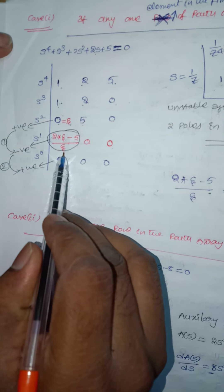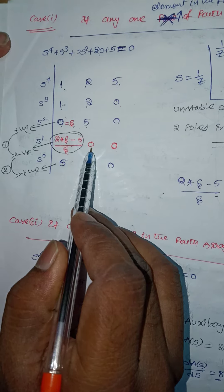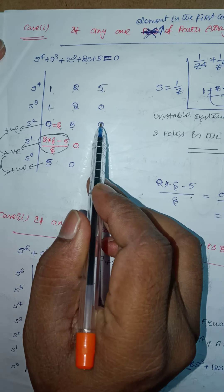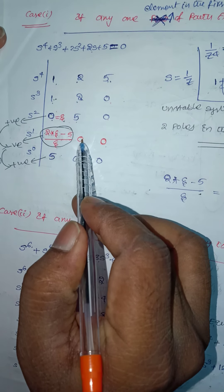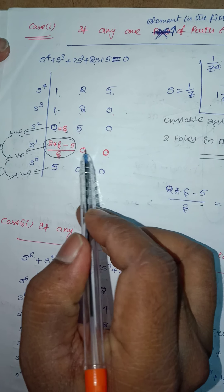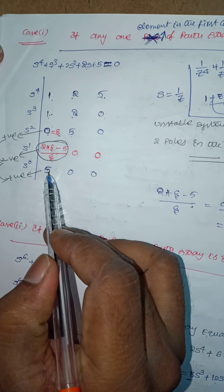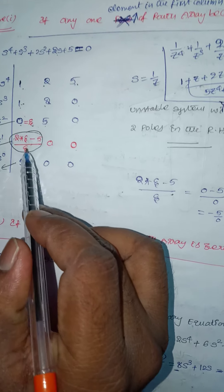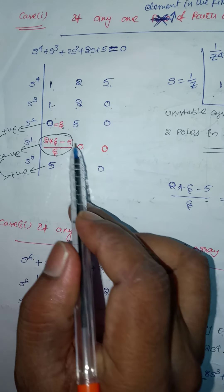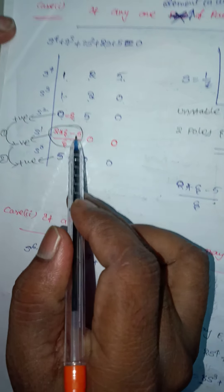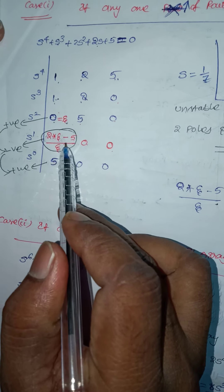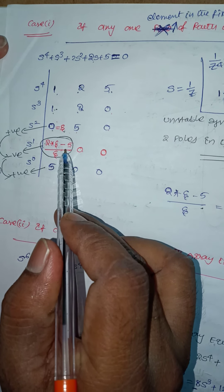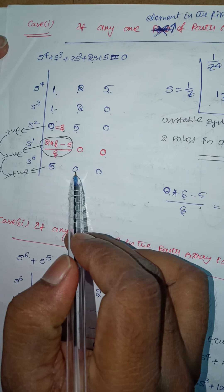2 epsilon minus 5 divided by epsilon — this element will become 0. This one into this one minus this one into this one divided by this one, so 0 into 0 will become 0. Next, this element is 5. This element will come here: this one into this one minus this one into this one — this one is equal to 0 — so after cancellation of this term we get 5 here, and this is 0.